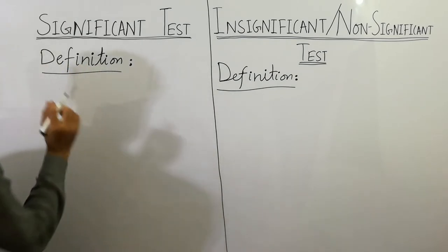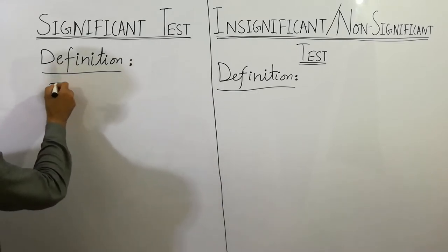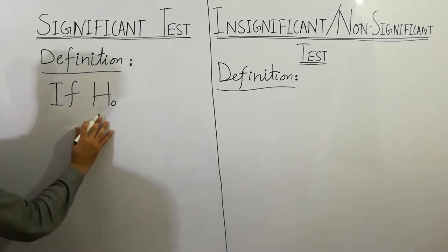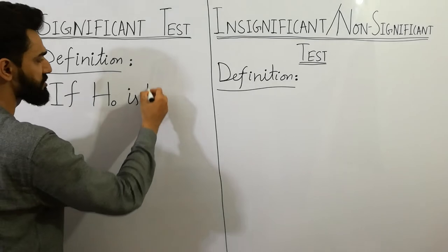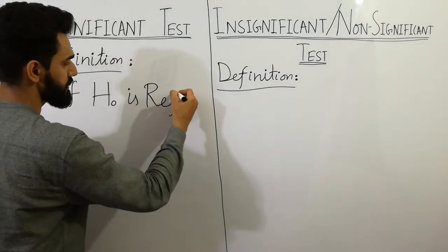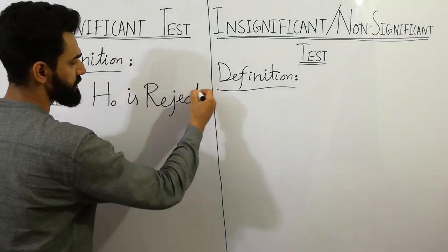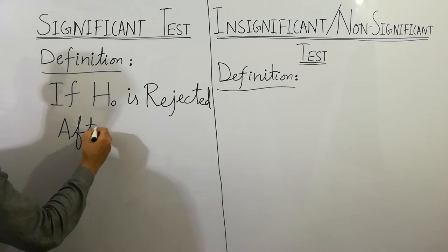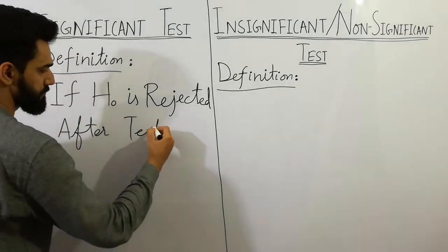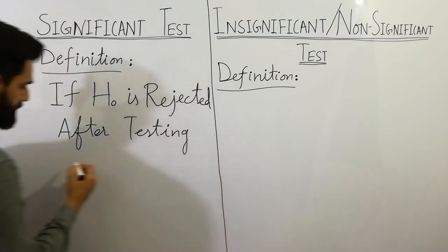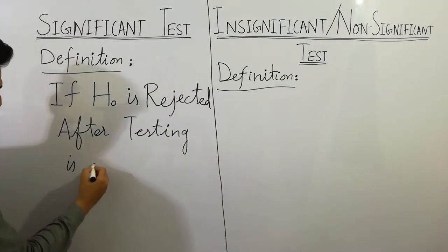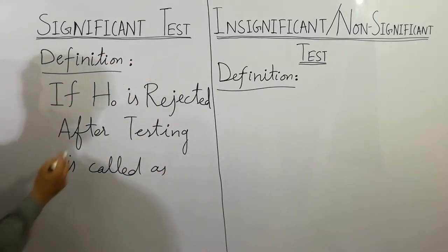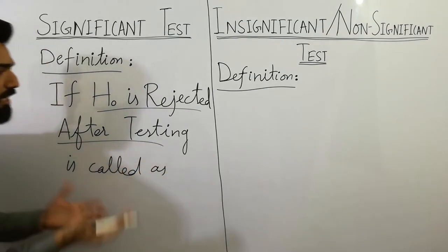What is the significant test? Very simple definition: if H₀, which is the null hypothesis, is rejected after testing, it is called as significant test. Simple: if H₀ is rejected after testing, that's called as significant test.